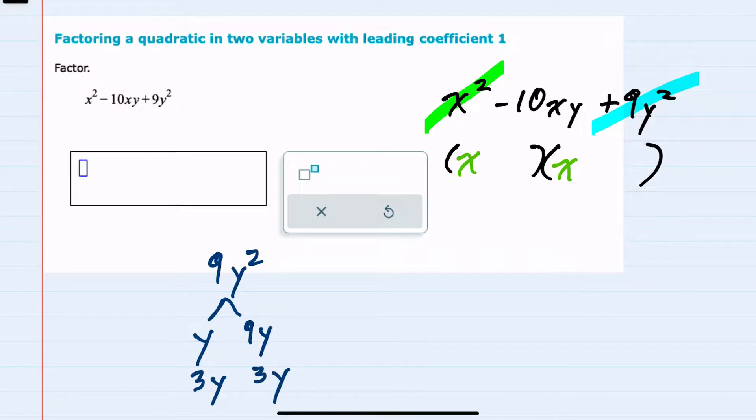The sign is positive so the signs have to be the same, and I see here that if I use a negative y and a negative 9y, multiplying gives me the 9y squared.